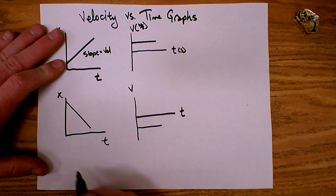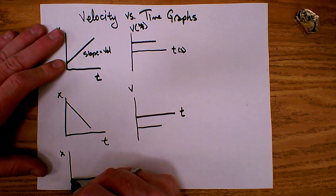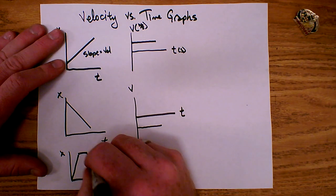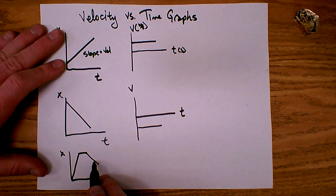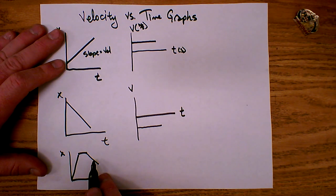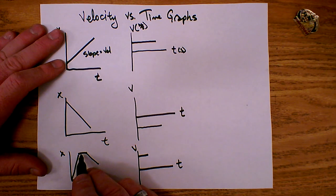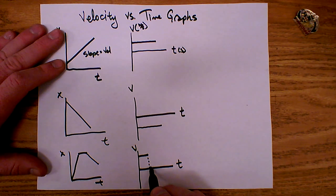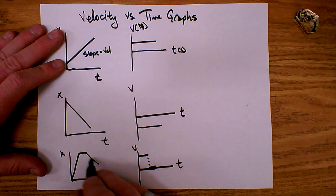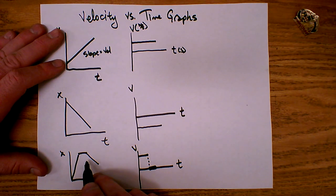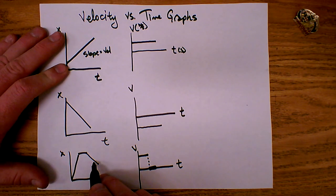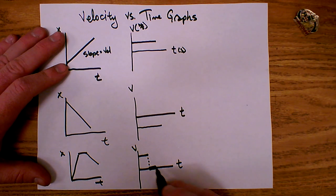I can represent more complicated motions as well. If I have a position-time graph with three different motions — a positive constant velocity, then stopped (zero velocity), and then a constant negative velocity — the velocity versus time graph might look like this: constant positive velocity for a certain amount of time, then zero velocity dropping down to the t-axis, and then a negative velocity. Notice this negative portion is not as steep, meaning I'm not traveling as fast or changing my position as much every second, so it doesn't go as far down as the positive portion goes up.